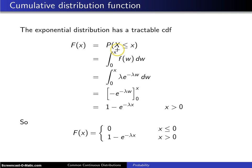To find the probability that X is less than or equal to little x, we integrate from the bottom of the support, 0, up to x of f of w dw. Now f of w for the exponential is lambda e to the minus lambda w.